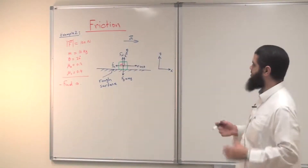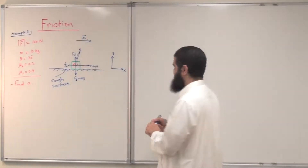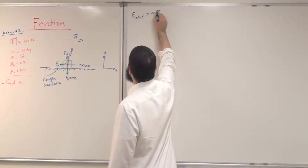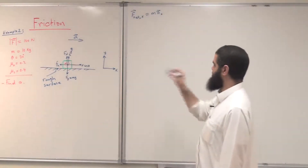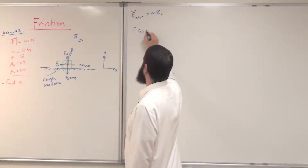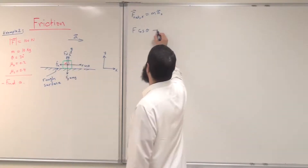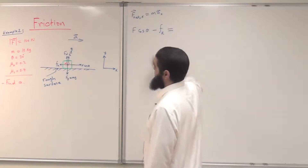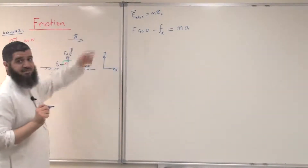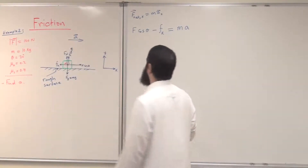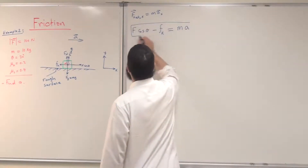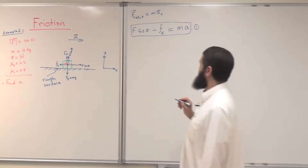Applying Newton's second law along the x-axis: F_net_x = m * a_x. The forces along x are f cosine theta in the positive direction and fk in the negative direction, so: f cosine theta − fk = m * a. This gives us equation number one with two unknowns: fk and the acceleration.